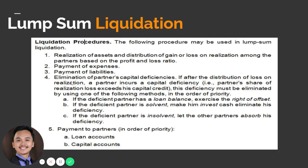Third, we have payment of liabilities — whether external or internal liability. Number four is elimination of partners' capital deficiencies. If, after the distribution of loss on realization, a partner incurs a capital deficiency — meaning the partner's share of realization loss exceeds his capital credit and the capital balance becomes negative — this deficiency must be eliminated. First, if the deficient partner has a loan, it can be used to offset the negative balance. Although financial accounting standards do not allow offsetting assets versus liabilities, in partnership law, the right of offset is allowed during liquidation if the partner has a deficient balance.